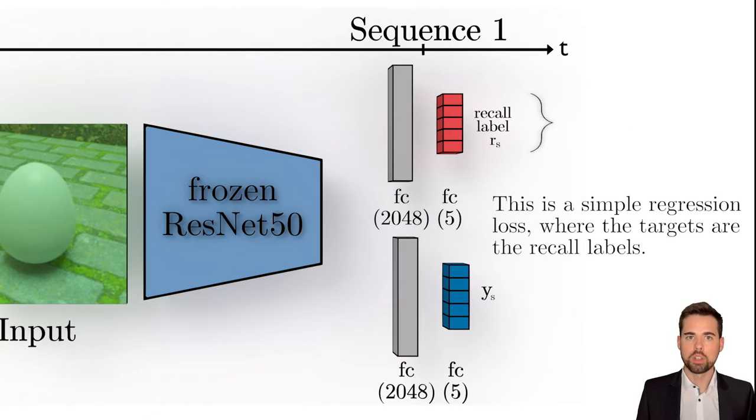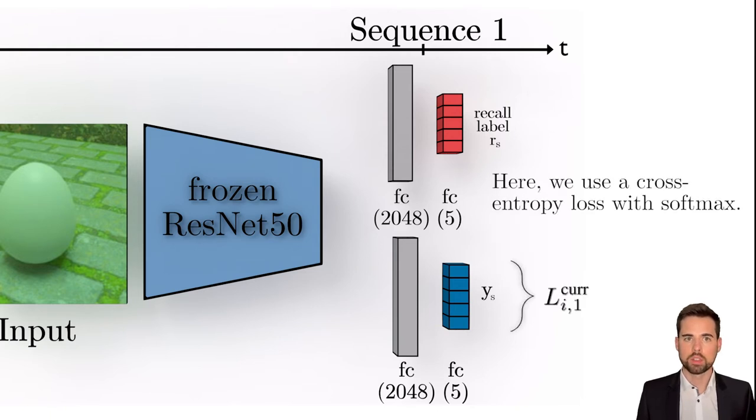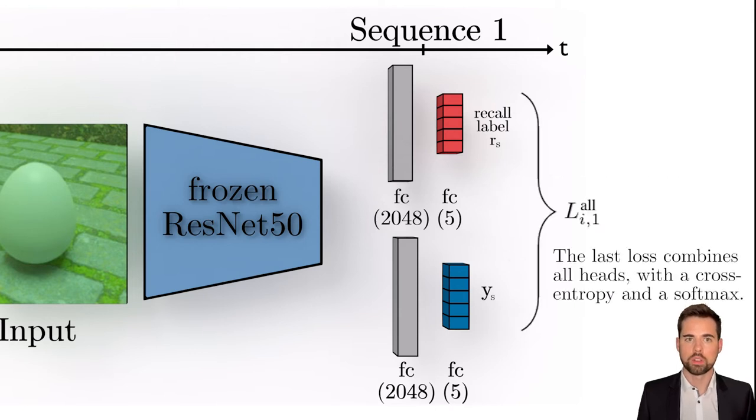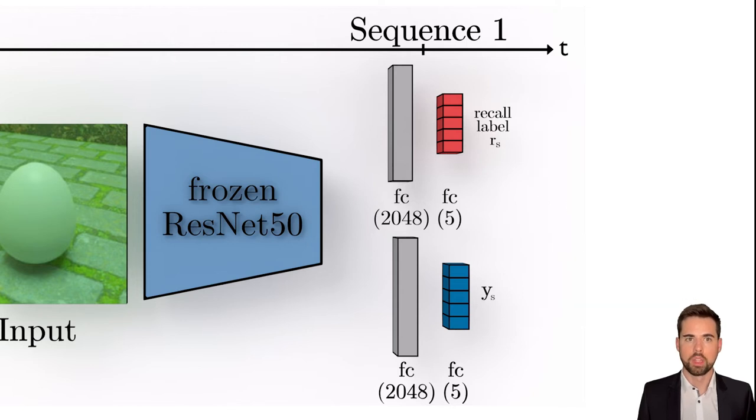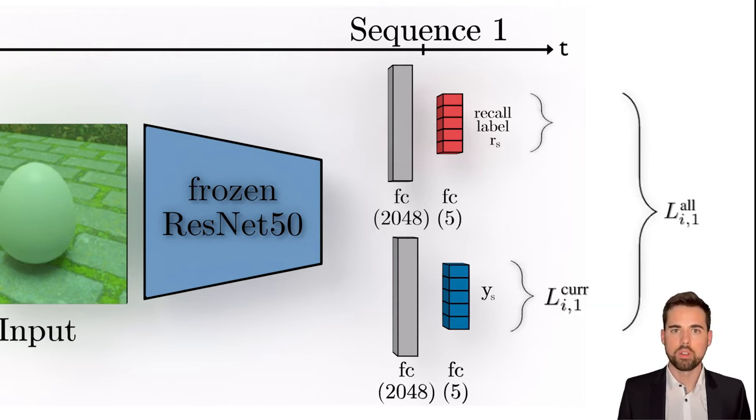Finally, all new categories are trained. We define three new loss terms: a simple regression loss for the old categories where we use the recall labels as a target, a cross-entropy loss with softmax for the new categories, and also a cross-entropy loss with softmax over all categories. Like this, the network is already able to learn new categories without completely forgetting the old ones.